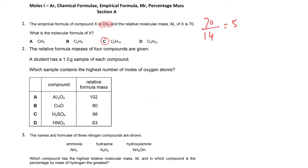Since we have 1 gram of each compound, we just divide 1 by the Mr. For aluminium oxide the Mr is 102, so moles = 1/102. We then multiply by the number of oxygen atoms: 3 for the first, 1 for the second, 4 for the third, and 3 for the fourth.